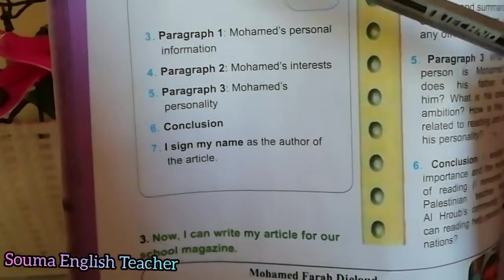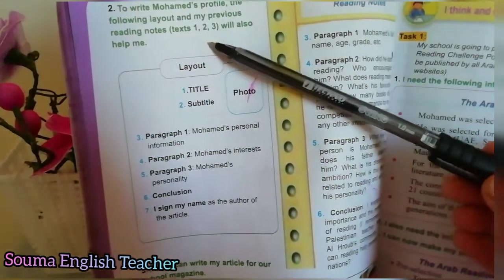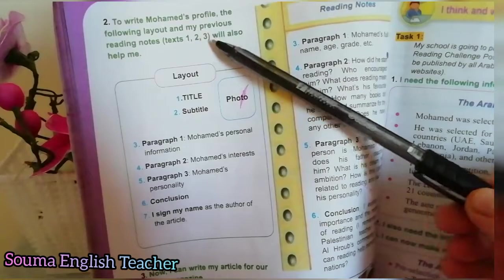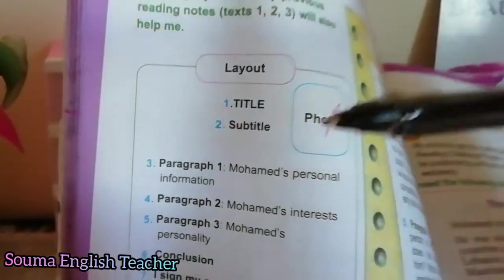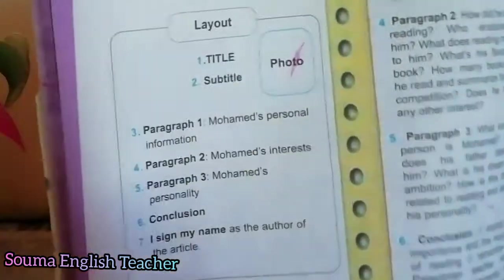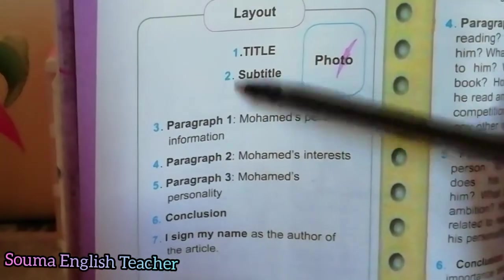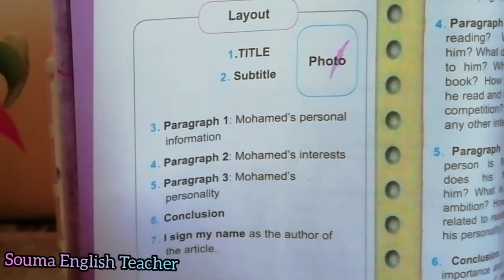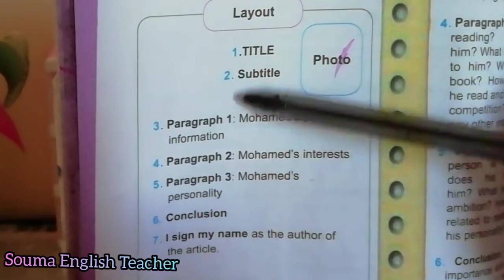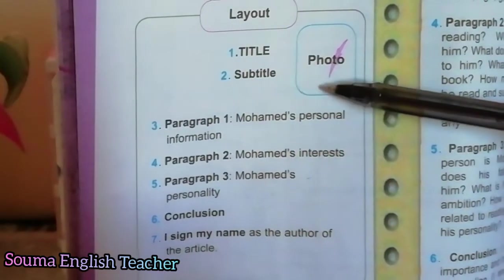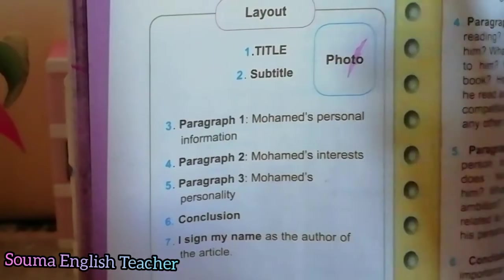Now we go to page 28. Let's look at the layout together. The layout is: 'To write Muhammad's profile, use the following layout and previous reading notes — texts one, two, and three will also help.' The layout shows us how to structure the article.